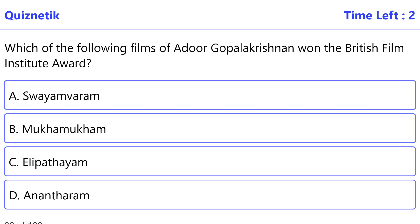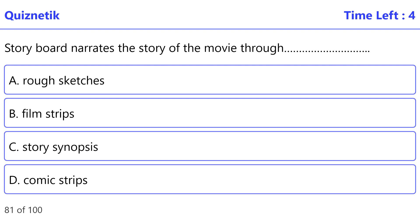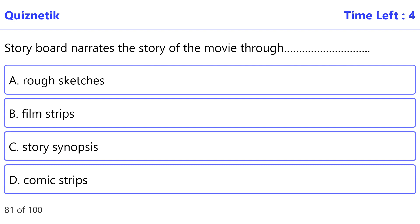Which of the following films of Adoor Gopalakrishnan won the British Film Institute Award? The correct option is C: Elippathayam. Storyboard narrates the story of the movie through: the correct option is A: rough sketches.